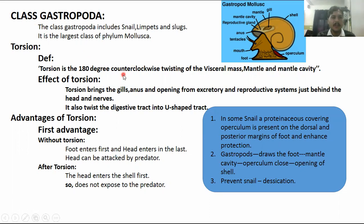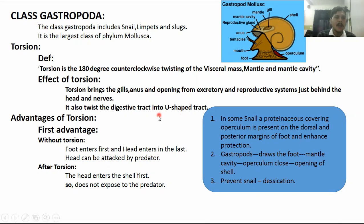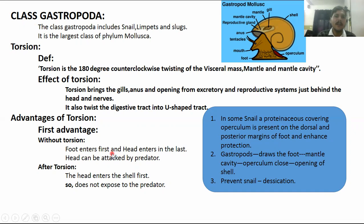The effect of torsion brings the gills, anus, and openings of the excretory and reproductive systems just behind the head. Without torsion, when the shell had rotation, the foot entered the shell first and the head entered last.